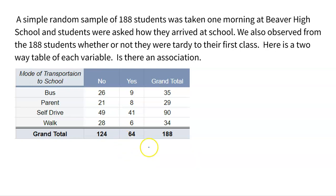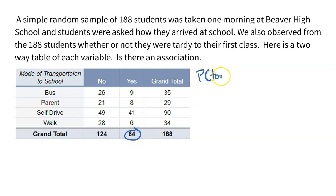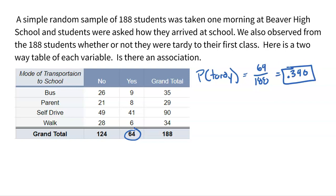We can't just look at numbers. Some might say, 'Look, 41 kids that drove themselves were tardy — there's an association!' But you need percentages because notice our totals are all different: 90 kids drove themselves and only 29 came with parents. So you have to look at proportions. I always start with the total: 64 total kids were tardy, out of 188. 64 divided by 188 is 0.340 — pretty close to 34% of kids are tardy overall.